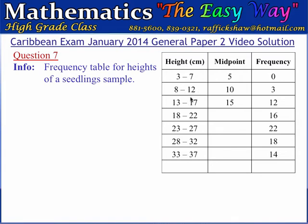We also observe that the upper boundary value of one class coincides with the lower boundary value of the next class. The upper boundary of the first class is 7.5 cm, which matches the lower boundary of the second class. Similarly, the upper boundary of the second class is 12.5 cm, matching the lower boundary of the third class. So the classes intersect at the boundary values.